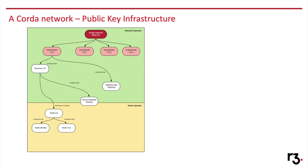Corda requires this structure below the subordinate to operate the identity service and Network Map Service for a permissioned network. It also requires a certificate extension for all network and node certificates, used by Corda to identify the role of the certificate. The second thing Corda requires is a name constraint, which the Doorman CA puts on the node CA issued, guaranteeing that any child certificates underneath carry the same name as the one issued by the Doorman.